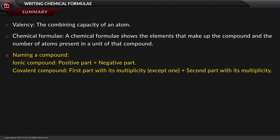Followed by naming a compound. An ionic compound is named as positive part plus negative part. The covalent compound is named as the first part with its multiplicity except when it is 1 plus the second part with its multiplicity.